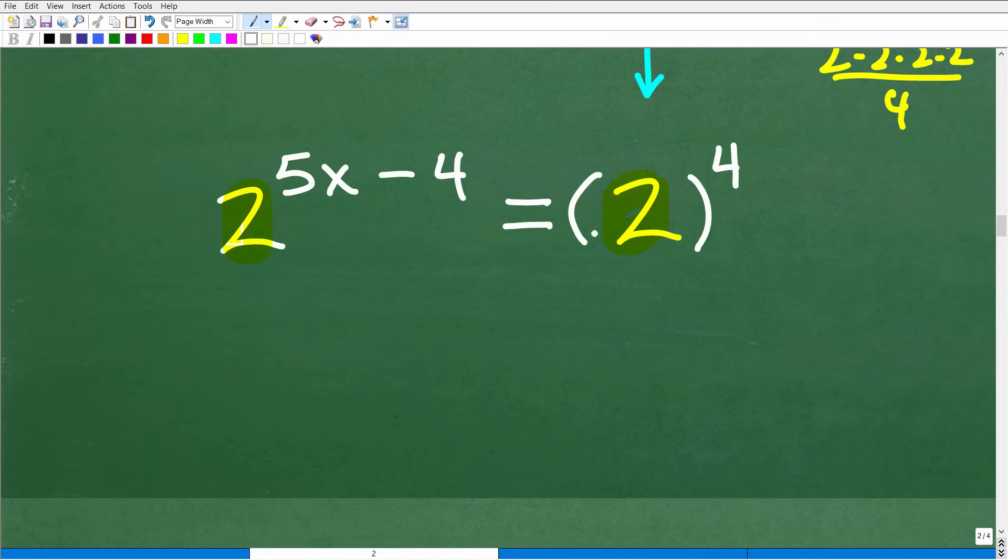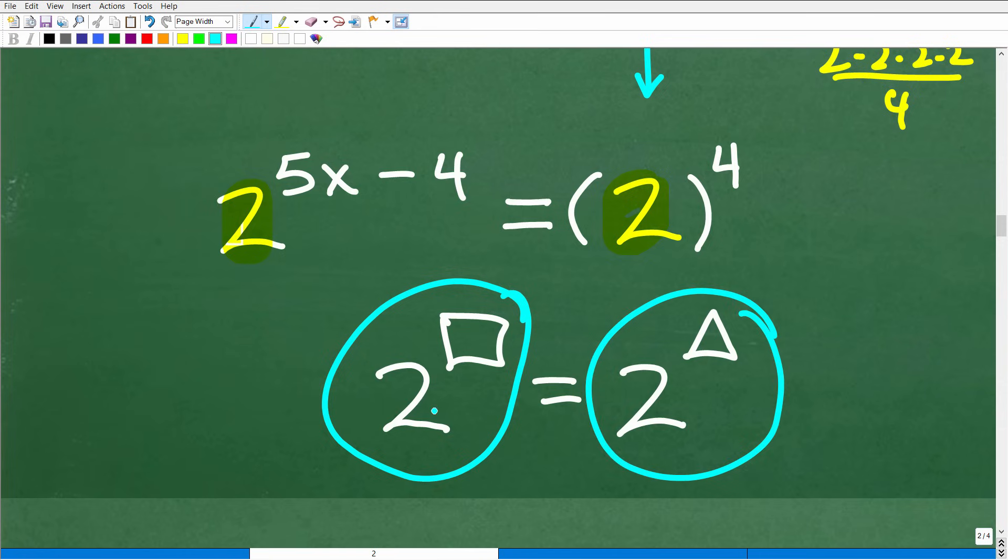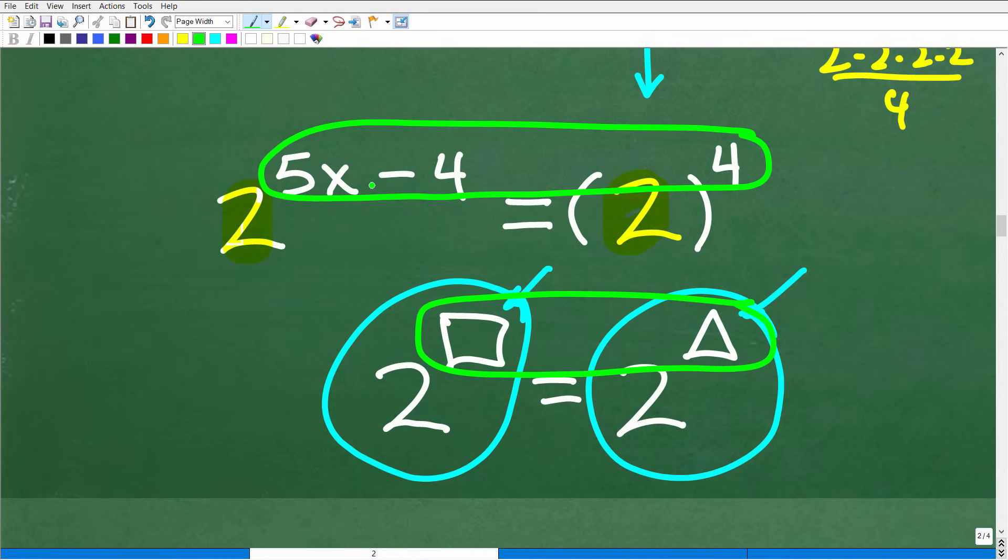Let me show you this. If I have two to the box is equal to two to the triangle, well, if this value is equal to this value and I'm taking two to some power and that's whatever power that is, it's the same thing as two to this power. Well, what does that mean? It means that these exponents are the same. They must be the same if this is the whole true. And that's the case here.